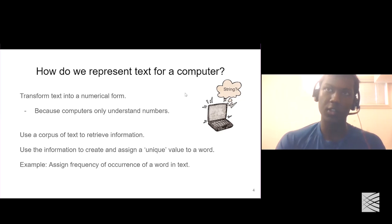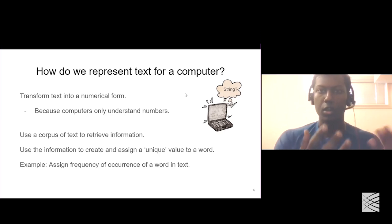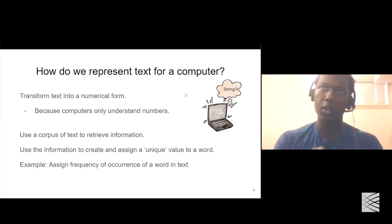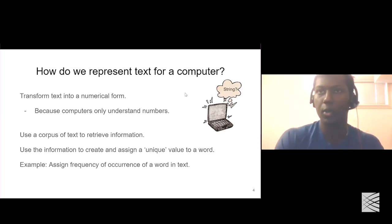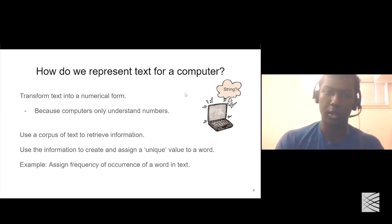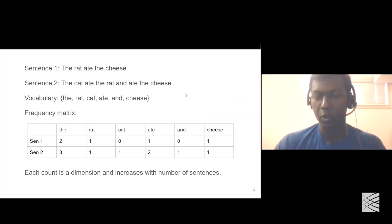We generally use some kind of database or collection of text and use that to extract information, so we can assign a unique identifier or value to each of the tokens in the corpus. Each token can be a fundamental unit of the corpus — a word, a sentence, a document. One example of transforming text into a numeric representation is counting the number of times a word occurs in a document, known as the frequency count matrix.